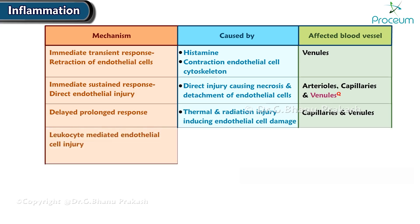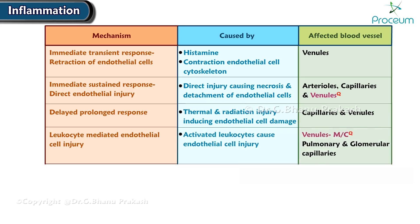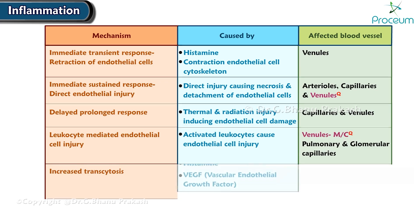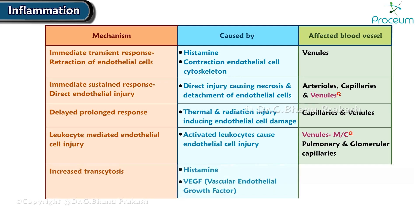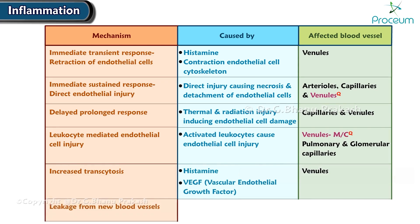Leukocyte-mediated endothelial cell injury occurs when leukocytes are activated and cause endothelial cell injuries, most commonly affecting the venules, but may also affect pulmonary and glomerular capillaries. Increased transcytosis is caused by histamine and VEGF and affects the venules. Leakage from new blood vessels, most commonly caused by VEGF and histamine, affects the site of angiogenesis.